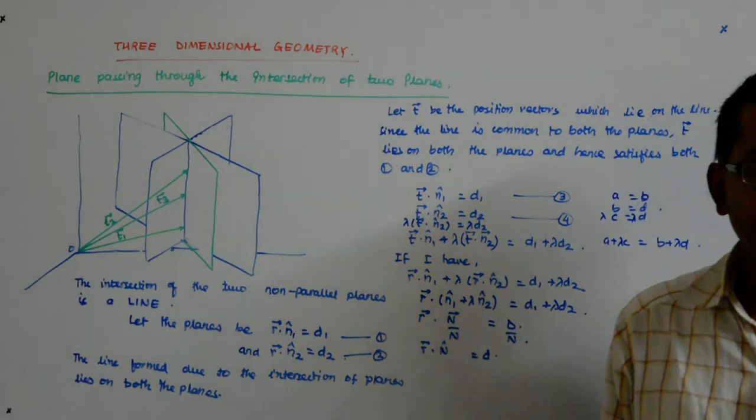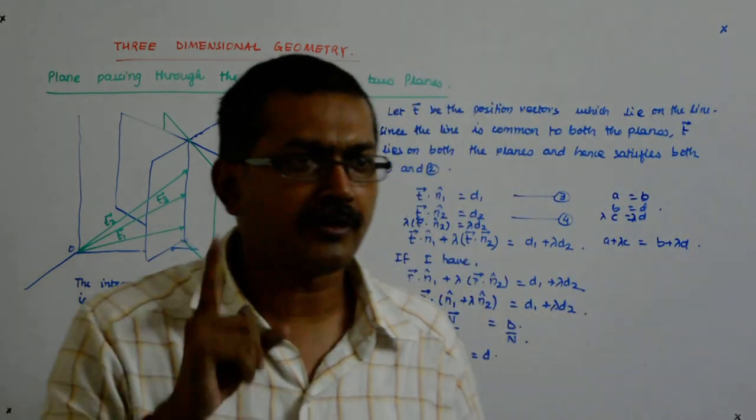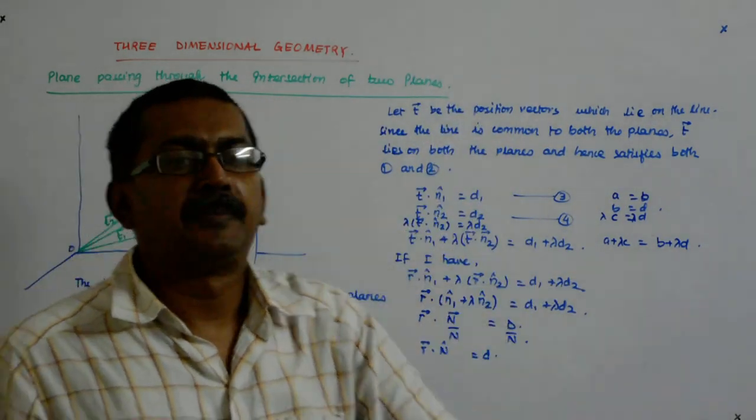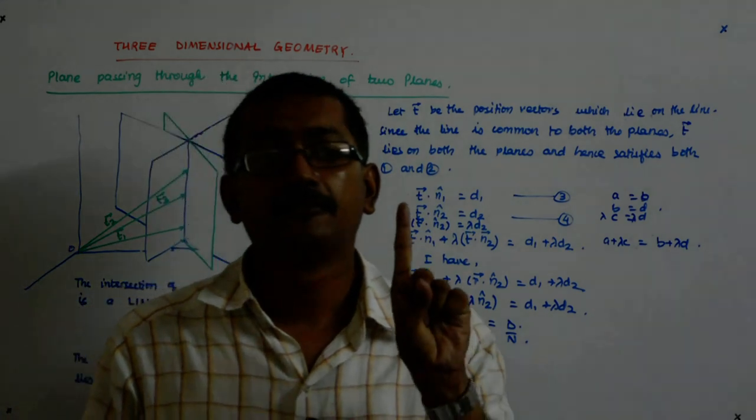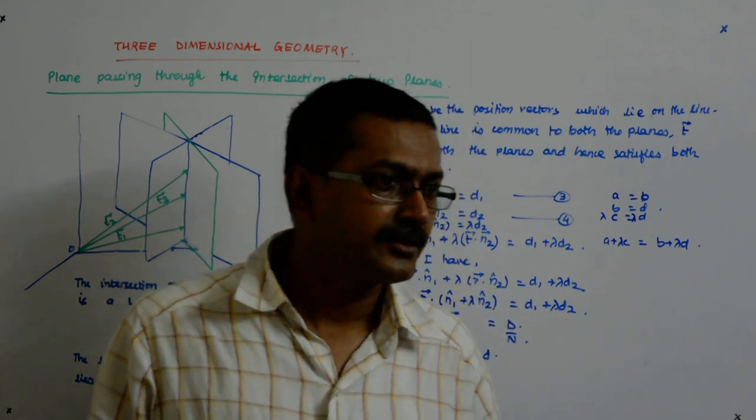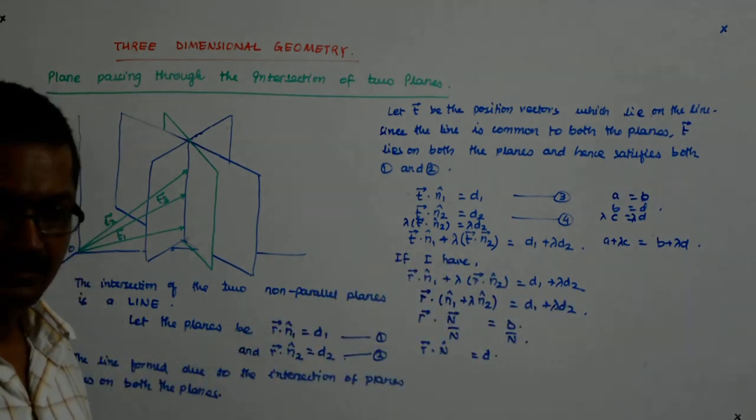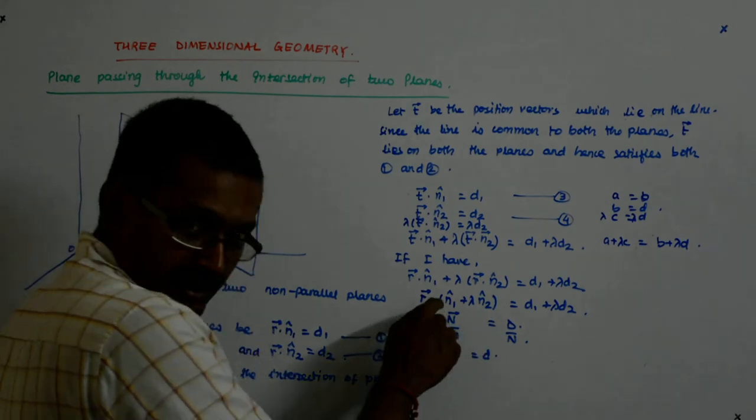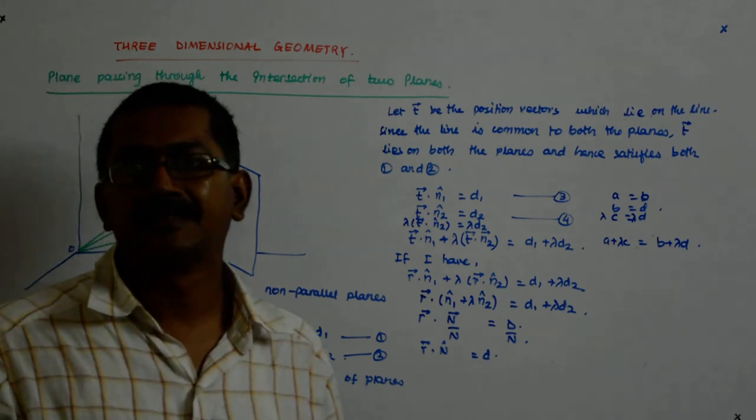Now there will be one more condition that you will be looking for the plane to be unique. So maybe it passes through some point or it is perpendicular to some other plane or perpendicular to some other vector. This kind of one more condition has to come in so that the value of lambda gets fixed. The moment it gets fixed, the plane becomes unique. Otherwise, you are left with infinite number of planes. Whose equation is something like this: N1 cap plus lambda N2 cap.